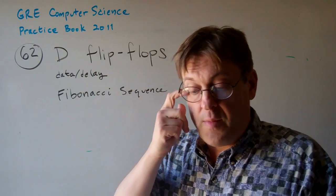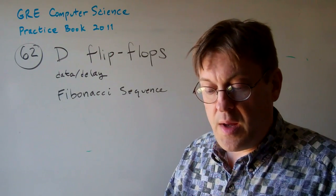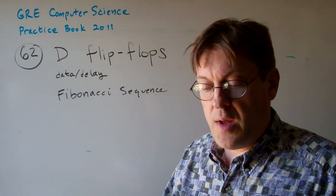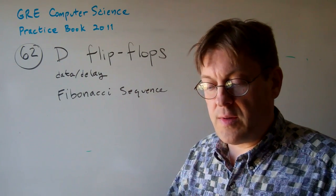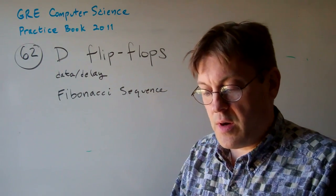Question 62. The Fibonacci sequence is defined by f1 equals 1, f2 equals 1, and f of n equals f of n minus 2 plus f of n minus 1 for all integers n greater than 3.